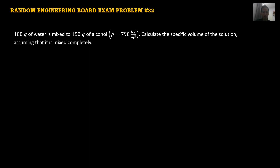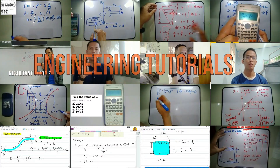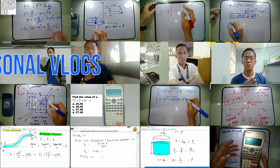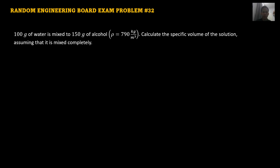Hi guys, welcome back to my channel. In this video we're going to continue our discussion on random engineering board exam problems. This is problem number 32, which can be included in the Mechanical Engineering Licensure Exam under Power and Industrial Plant Engineering, or in the general engineering board exam under Physics. The problem: 100 grams of water is mixed with 150 grams of alcohol with a density of 790 kilograms per cubic meter. Calculate the specific volume of the solution, assuming it is mixed completely.